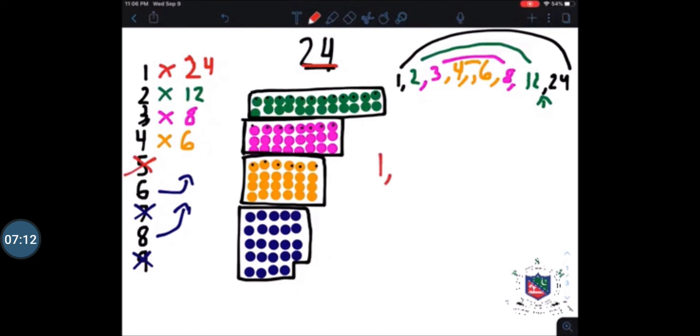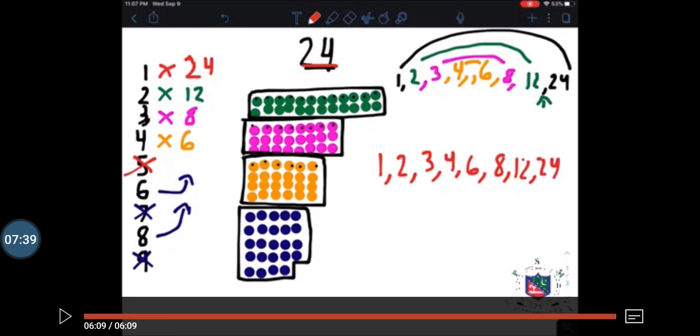So our factors of 24 will be 1, 2, 3, 4, 6, 8, 12, and 24. My dear students, when we are writing the factors, we cannot repeat the numbers. I hope you all have enjoyed this rainbow of factors with me. Now you all have to try this rainbow - it's very interesting and easy.